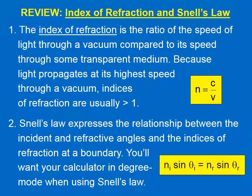Let's review. The index of refraction is the ratio of the speed of light through a vacuum compared to its speed through some transparent medium. Because light propagates at its highest speed through a vacuum, indices of refraction are usually greater than 1.